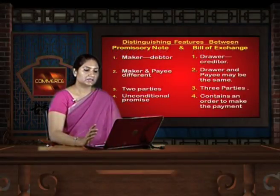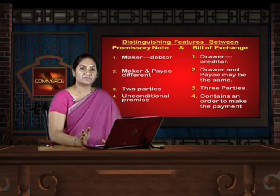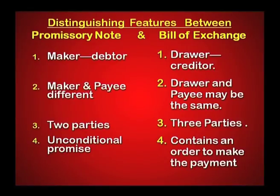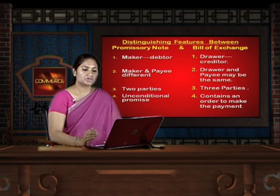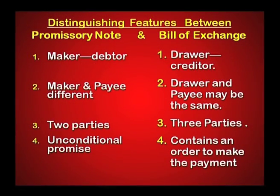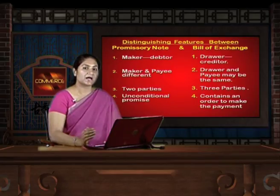Let us discuss the distinguishing features between a promissory note and a bill of exchange. In a promissory note, the person who makes it is the debtor — he owes money to another person. In a bill of exchange, the drawer is the creditor and the drawee is the debtor, since the drawer is ordering the drawee to make payment either to himself or to the payee named on the bill.